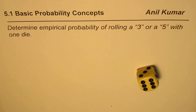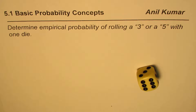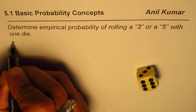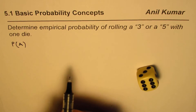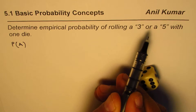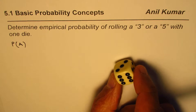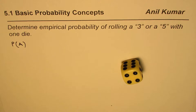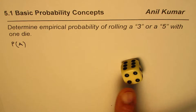So we do have a die here. Empirical probability is actually about experimenting and then finding the ratio of favorable events to the number of trials — that is how we get empirical probability. Let us define event A as rolling a 3 or a 5. We have a standard die, so you could get numbers 1 to 6. Those are the total number of outcomes.